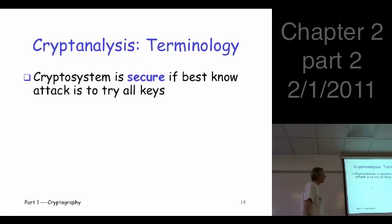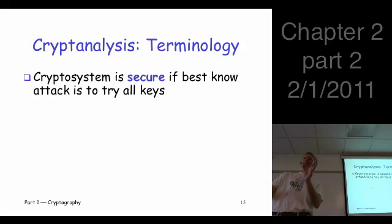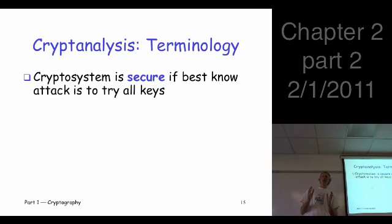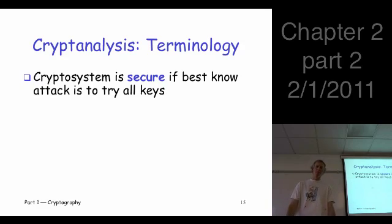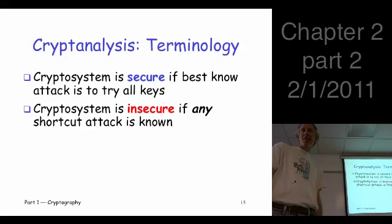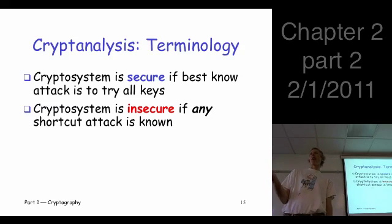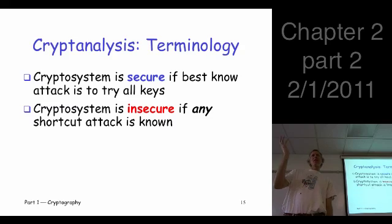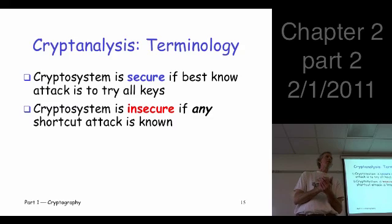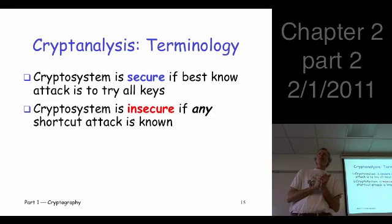We have a somewhat unusual definition: a cipher is considered secure if the best known attack is an exhaustive key search. That means a cipher is insecure if there is any shortcut attack — anything faster than exhaustive key search. You can always do an exhaustive search, so if there's any shortcut shorter than that, we say the cipher is insecure.